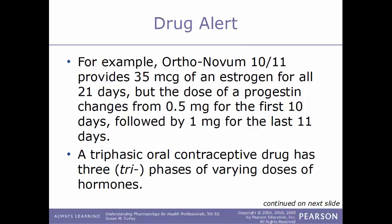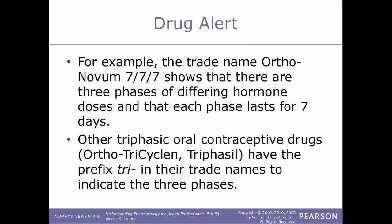A triphasic oral contraceptive drug has three phases of varying doses of hormones. For example, the trade name drug Ortho-Novum 7/7/7 shows that there are three phases of differing hormone doses and that each phase lasts for seven days. Other triphasic contraceptive drugs — Ortho Tri-Cyclen and Triphasil — have the prefix tri in the trade name to indicate the three phases.